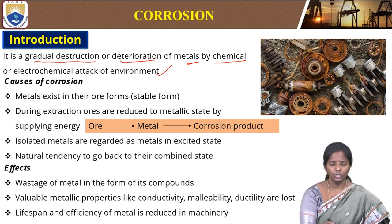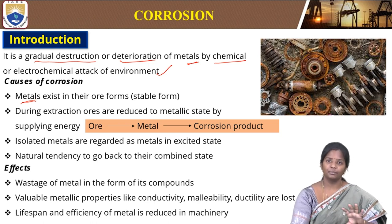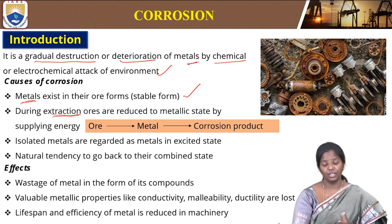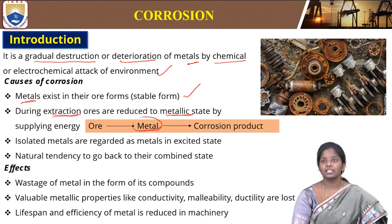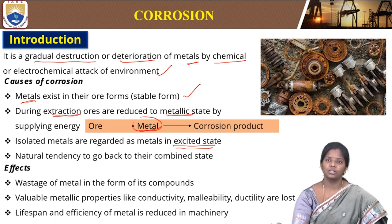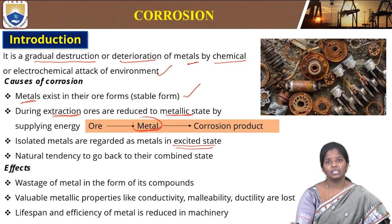What are the main causes? Generally metals exist in their ore forms before they are purified. That is a stable form — that ore form is a stable form. When during extraction, when we are extracting metal from their ores, they are reduced to their metallic state. Ores are converted to metals by supplying some energy required to reduce the ores to metals.